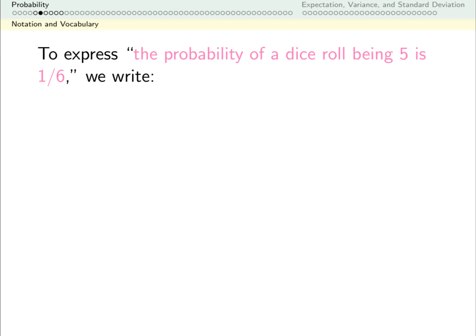We're going to use a particular shorthand because writing these things out in sentences takes too long. So if I want to write the probability of a dice roll being 5 is 1/6, I would use PR for probability. My event is a dice roll. So I'm going to give that a variable, and it's nice if it's a capital letter. The value that I'm concerned with is 5. So this is the probability that my event of rolling a dice gives me the value 5. A probability is a number between 0 and 1, and in this case, that number is 1/6.